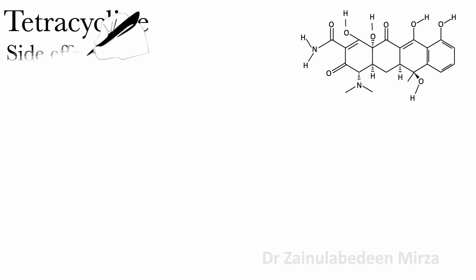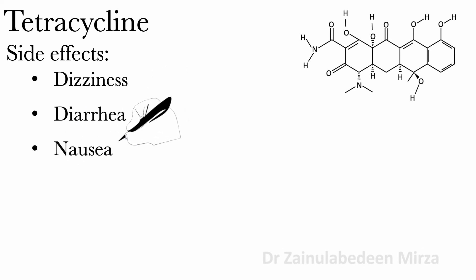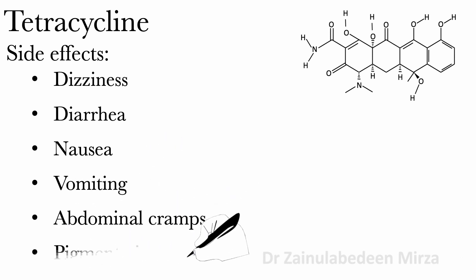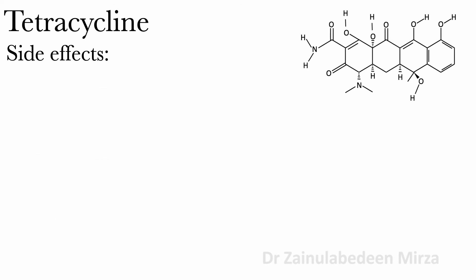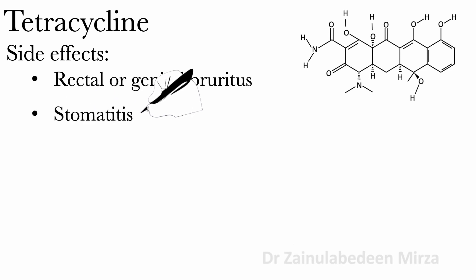Side effects of tetracycline are dizziness, diarrhea, nausea, pounding, abdominal cramp, pigmentation of skin or mucous membrane, rectal or genital pruritus, vulvovaginitis, and stomatitis.